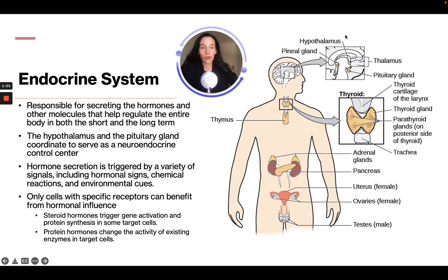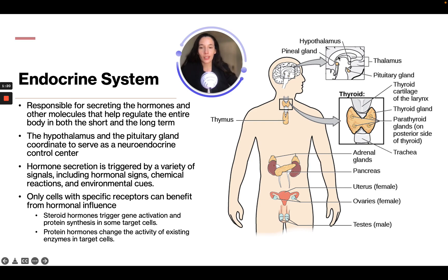We can see all the different glands of the endocrine system. Up in the brain, we have the hypothalamus and the pineal gland, the thalamus, and the pituitary gland. We know that the pituitary and the hypothalamus serve as the neuroendocrine control center, which makes sense because neuroendocrine — it's in the brain.